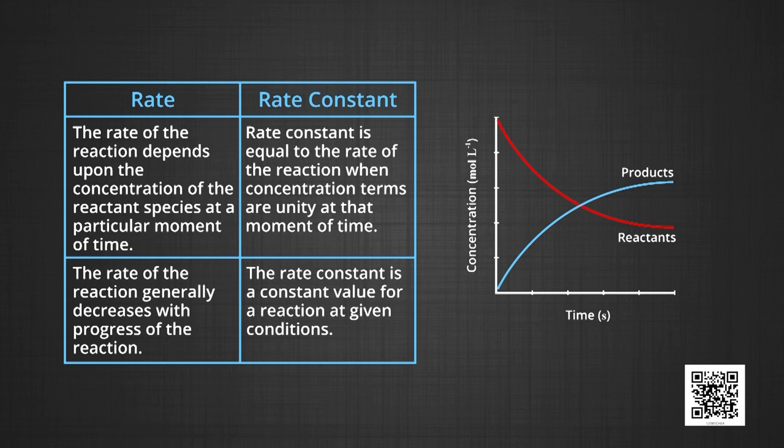Before going further, it is very important to know the difference between the rate of the reaction and the rate constant. The rate of the reaction is expressed as the speed at which reactants are converted into products, while the rate constant is the proportionality constant in the rate law expression. The rate of the reaction depends upon the concentration of the reactant species at a particular moment in time, while the rate constant equals the rate of the reaction when concentration terms are unity. The rate of the reaction generally decreases with the progress of the reaction, whereas the rate constant is a constant value for a reaction at given conditions.